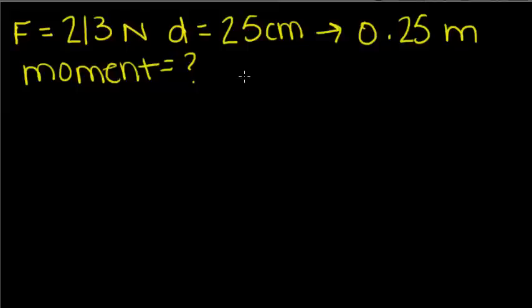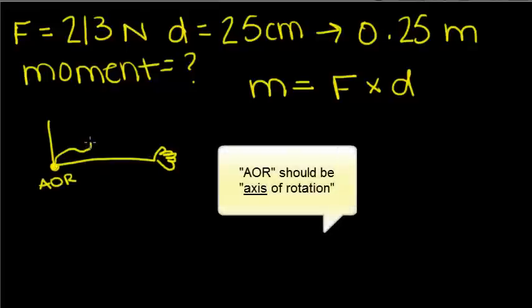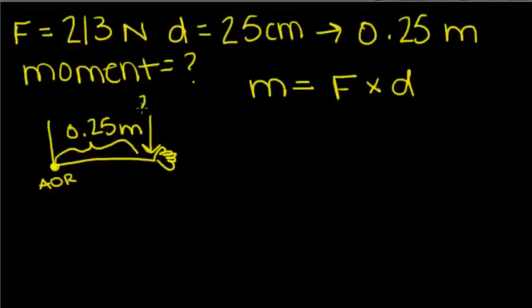What we're looking for is the moment. We know the equation moment equals force times distance, and we're going to try and draw a free body diagram. This right here is our axis of rotation.